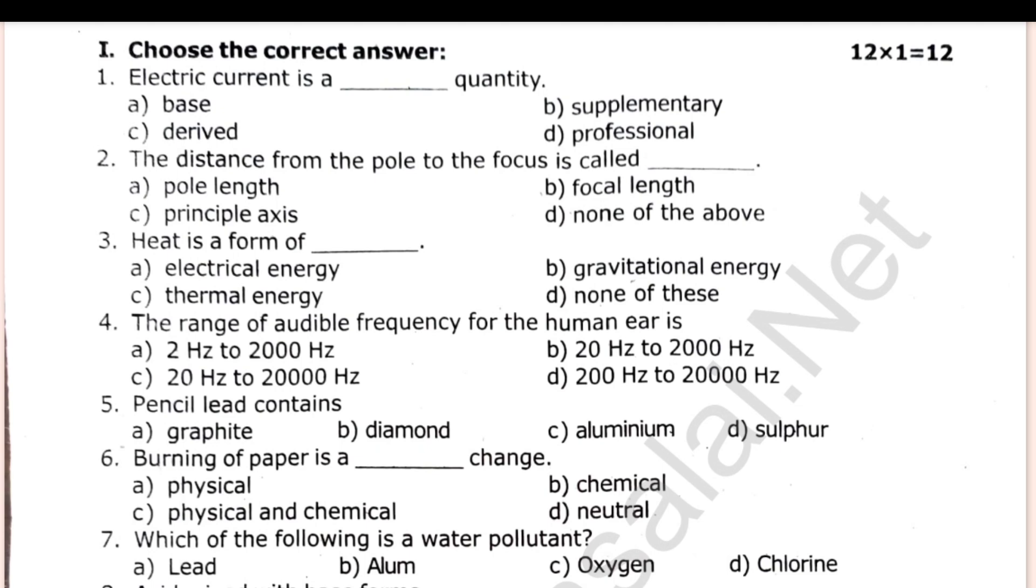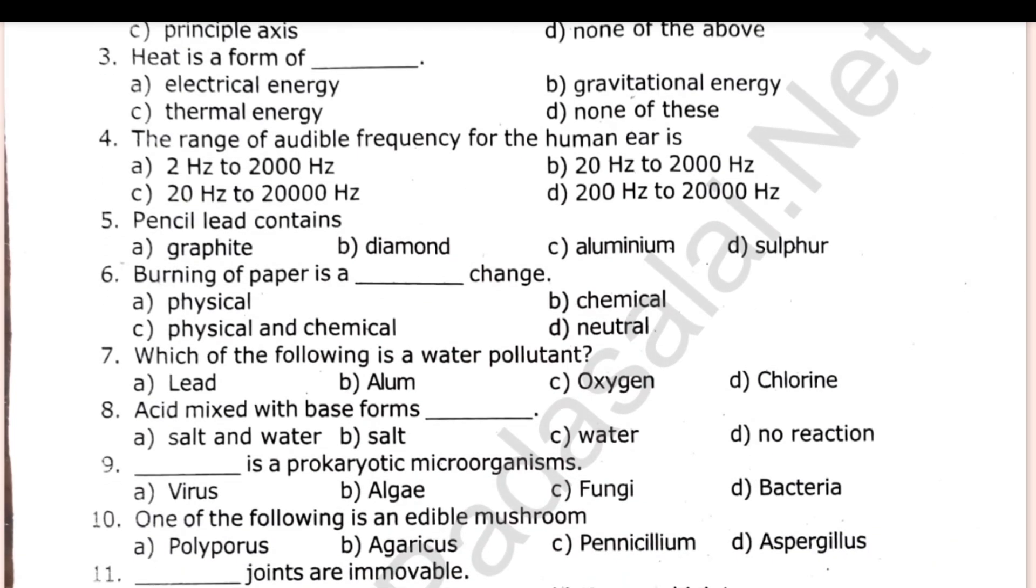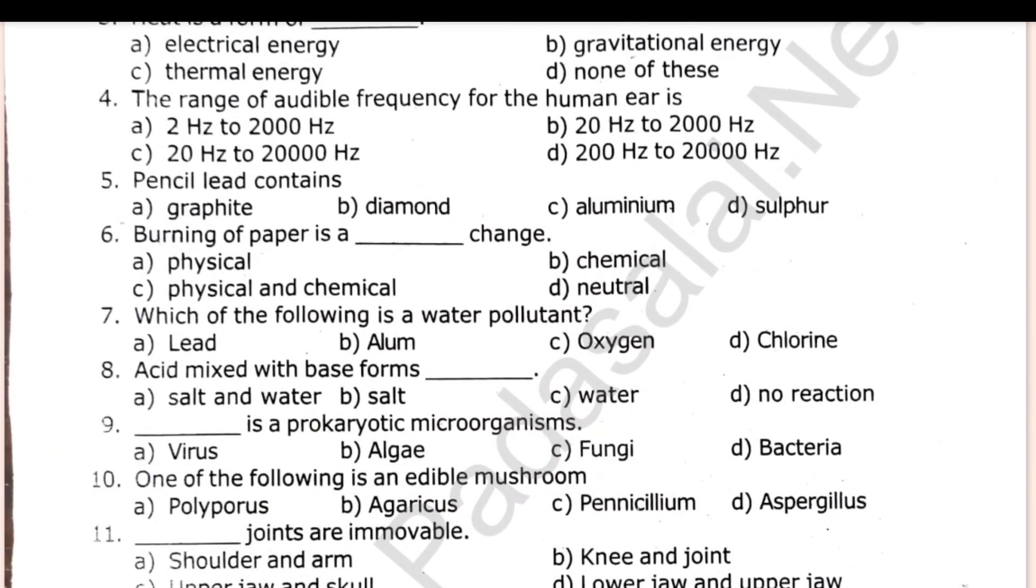Electric current is a dash quantity. The distance from the pole to the focus is called. Heat is a form of. Burning of paper is a dash change. Acid mixed with base forms dash. Dash is a prokaryotic microorganism.